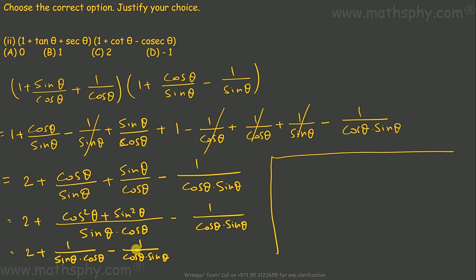These two are the same — sinθ·cosθ equals cosθ·sinθ — so they cancel each other out. This gives 2 minus 0, which equals 2. So the correct answer is C.